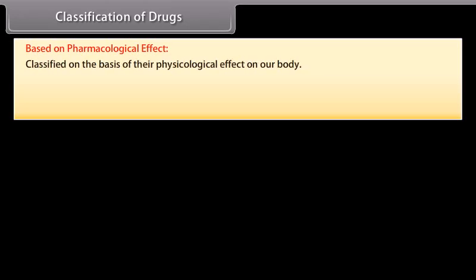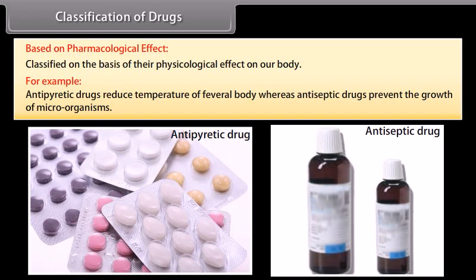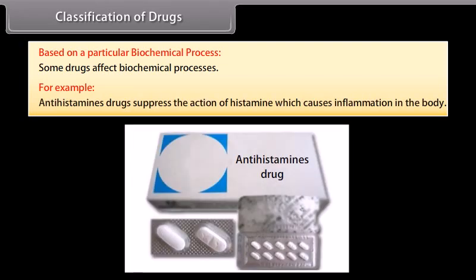Classification of drugs: Drugs can be classified in several ways. Based on pharmacological effect: drugs are classified on the basis of their physiological effect on our body. For example, antipyretic drugs reduce the temperature of a fevered body, whereas antiseptic drugs prevent the growth of microorganisms. Based on a particular biochemical process: some drugs affect biochemical processes. For example, antihistamine drugs suppress the action of histamine, which causes inflammation in the body.